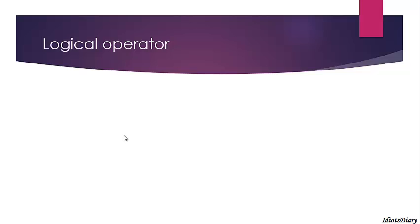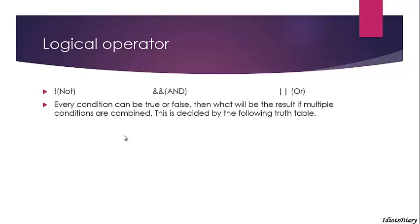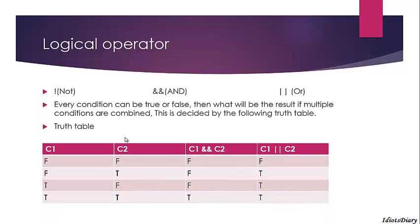Let's move to the logical operators. There are three logical operators in C: NOT, AND, and OR. AND and OR operators are used to combine two or more conditions. In C, every condition can be true or false. The output of multiple conditions combined by AND or OR is decided by the truth table. The truth table is the combination of conditions and their results.